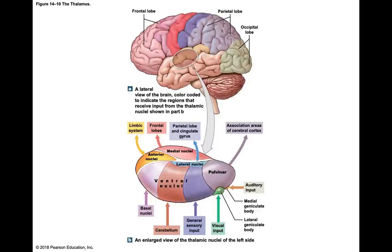The third ventricle divides the thalamus into right and left sides. Within the thalamus there are different nuclei: the anterior nuclei, the medial nuclei, the pulvinar nuclei, and the ventral nuclei, each with different functions.